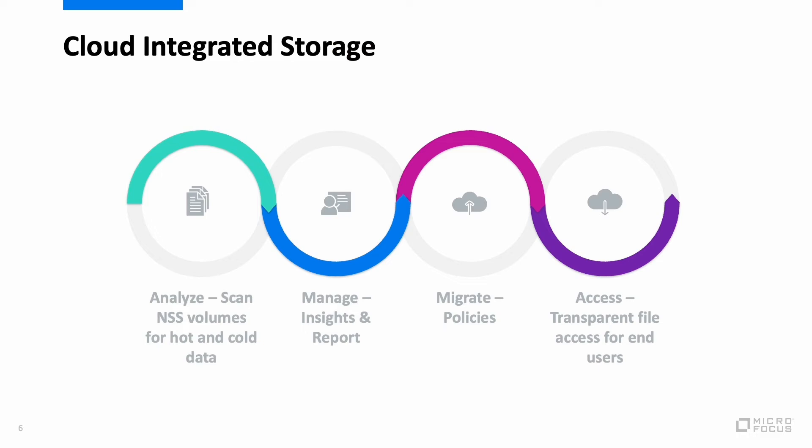Unstructured data is exploding and the need for effective storage management is more now than ever. Cloud integrated storage provides insights into your storage state associated with all your OES servers. It helps you devise effective policies based on various parameters like file time, owner, file path and more to offload data to any S3 compatible private or public cloud storage. Most important files remain on the faster and potentially more expensive primary storage. If your users ever need to access that old project file stored on cloud, it is available like any other file on demand.